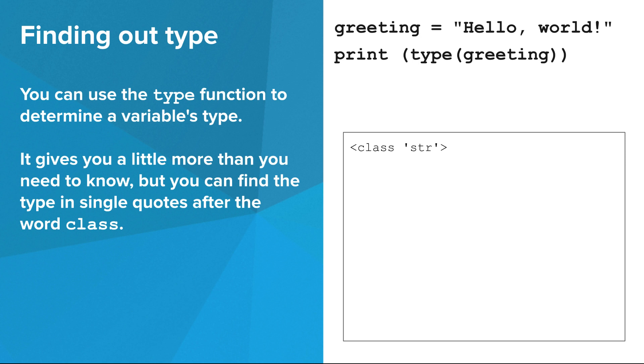Unlike the program that we saw a few slides ago, this program prints the type of the variable greeting rather than the value. You can do this using the type function. The output is class str in triangle brackets, and this might look a little weird, but the important part is the part inside the single quotes, str, which is in fact the type of the variable greeting.